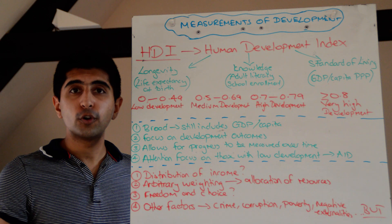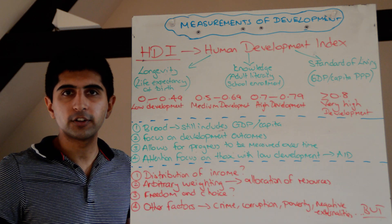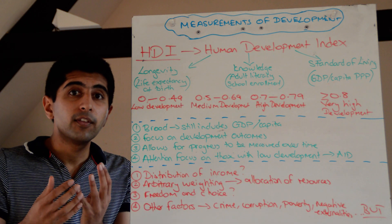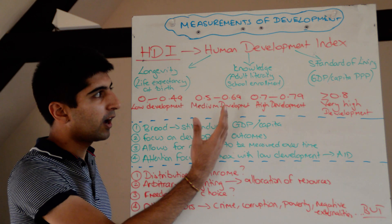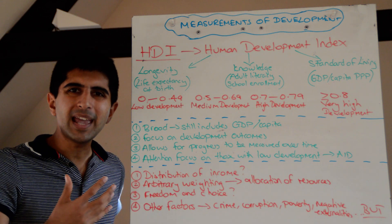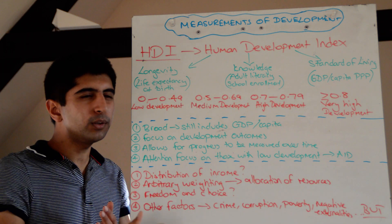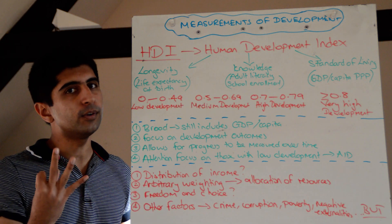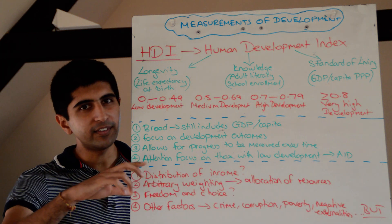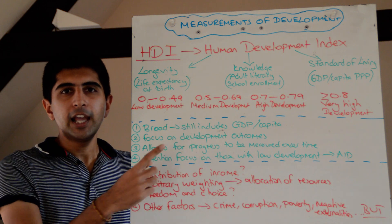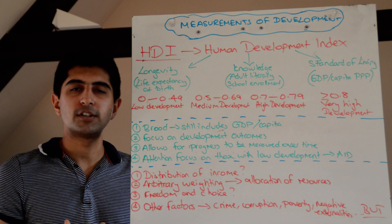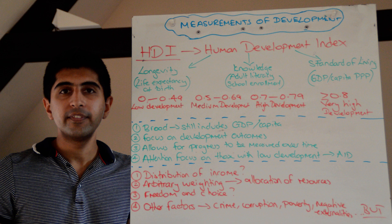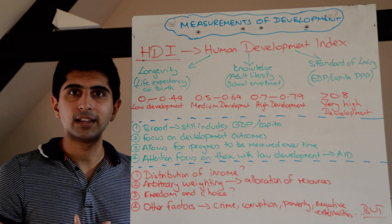Freedom and choice — which both Sen and Todaro discuss in their definition of development — are not measured in the HDI at all. Similarly, other factors like crime, poverty levels, corruption, and the costs of negative externalities are all excluded. So while it may be broad, is it as broad as we'd want? We're still only looking at three things. A counter-argument, however, is that its selectivity is precisely what makes it such a renowned measure — focusing on the three most important pillars of development is arguably what makes it so effective.